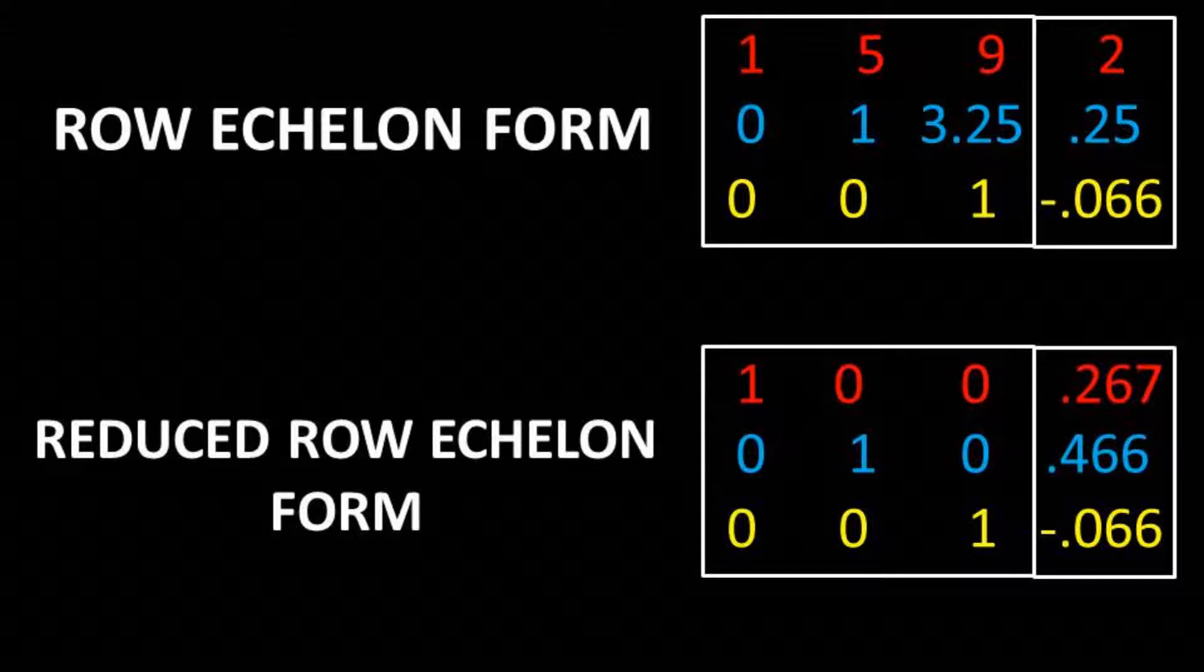We then want to further reduce this matrix to have zeros above the diagonal. This is known as reduced row echelon form. The diagonal number ones are known as pivots.